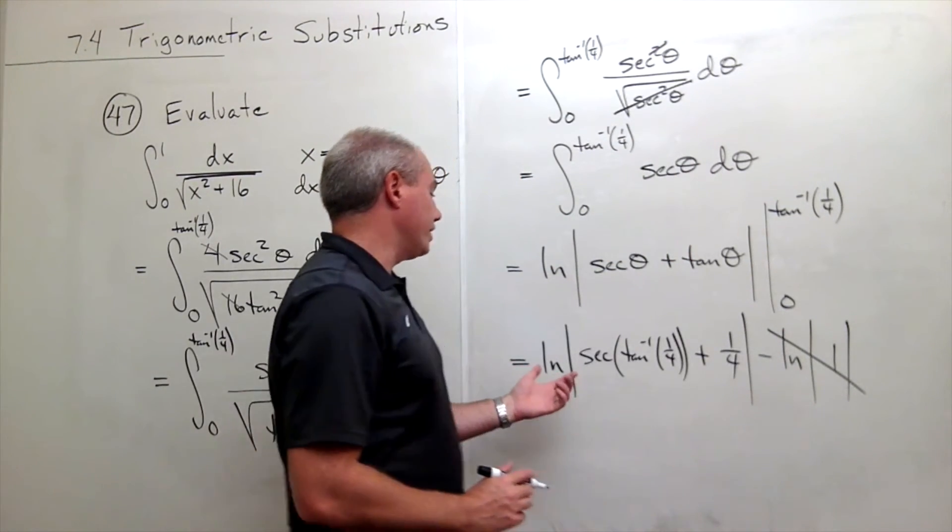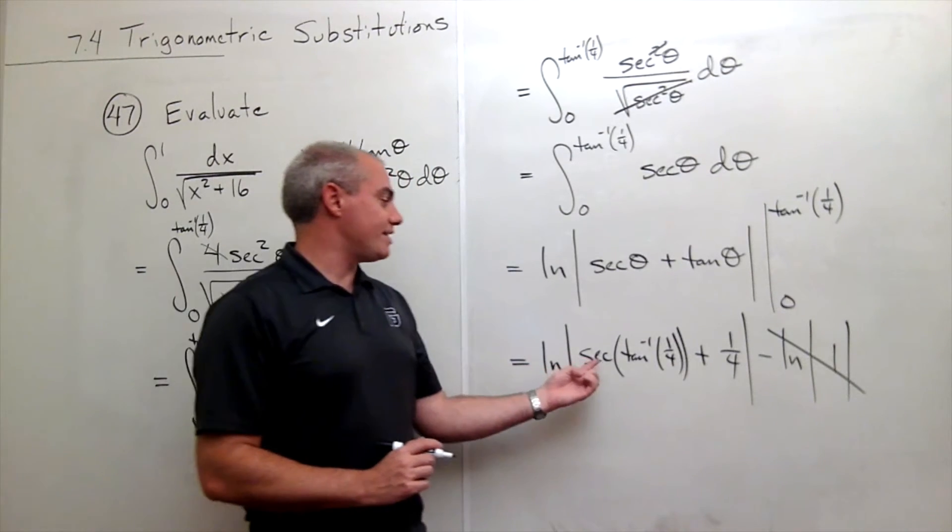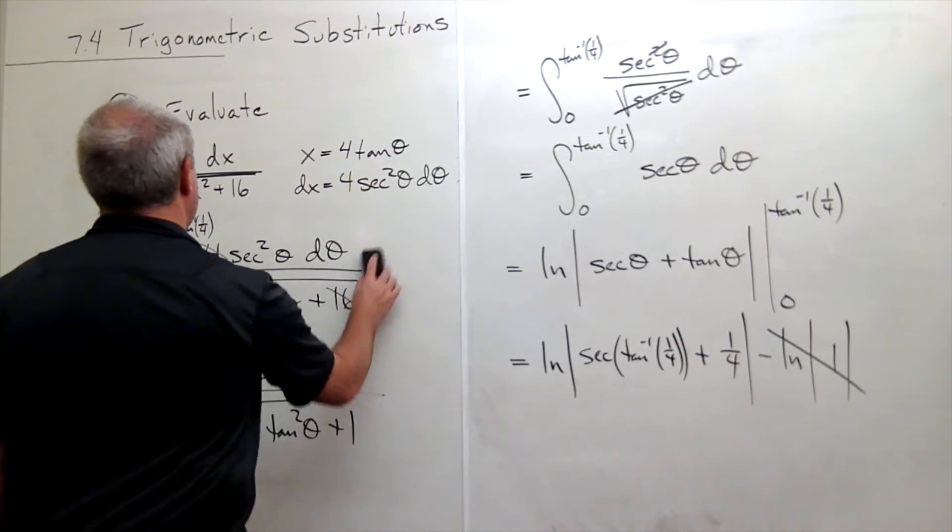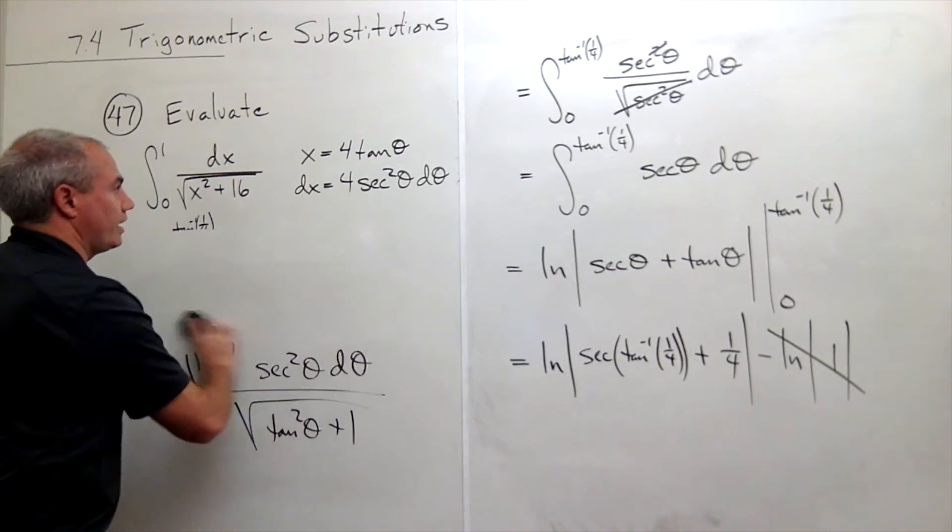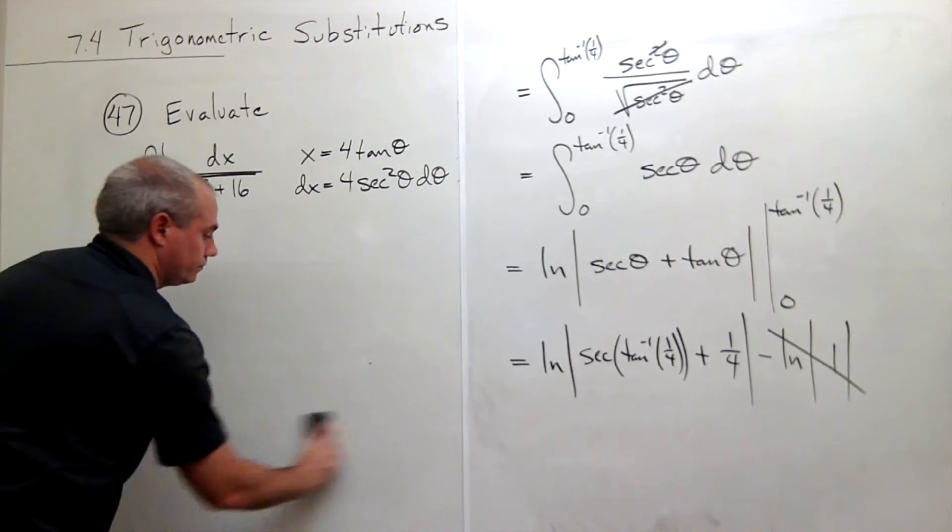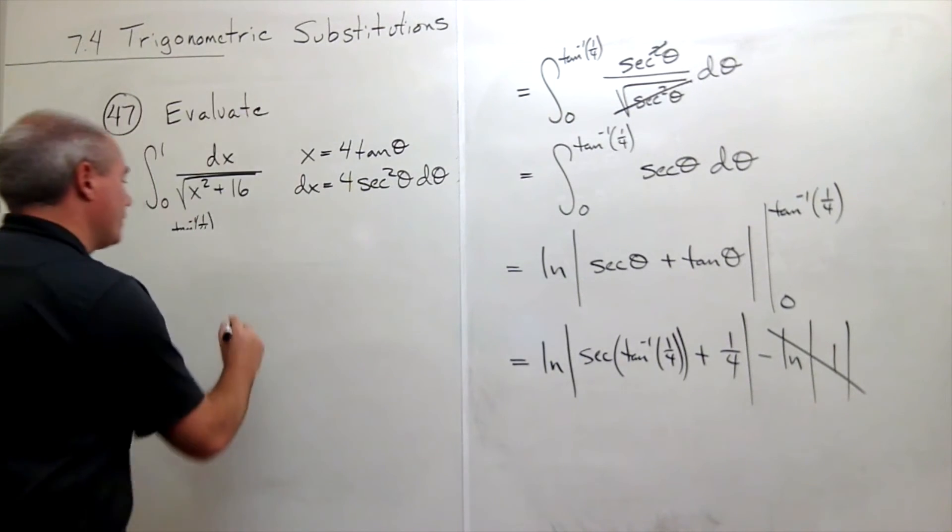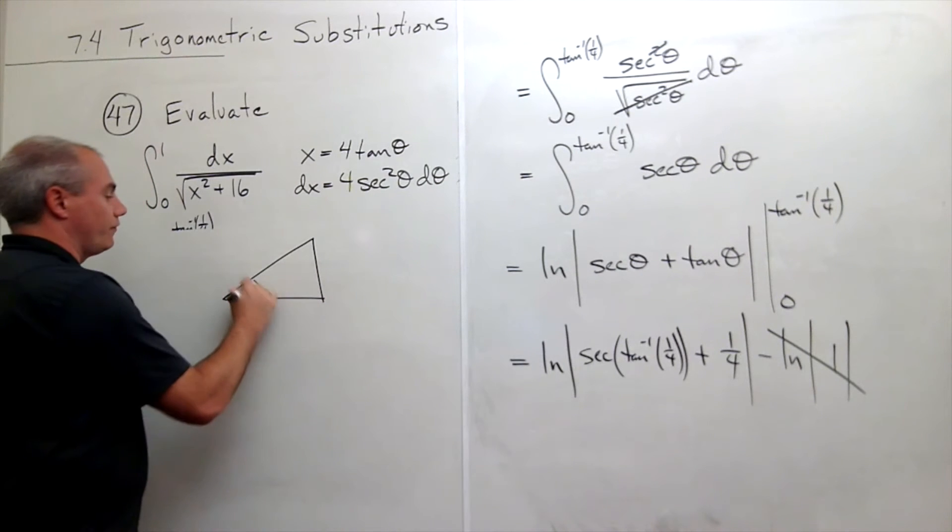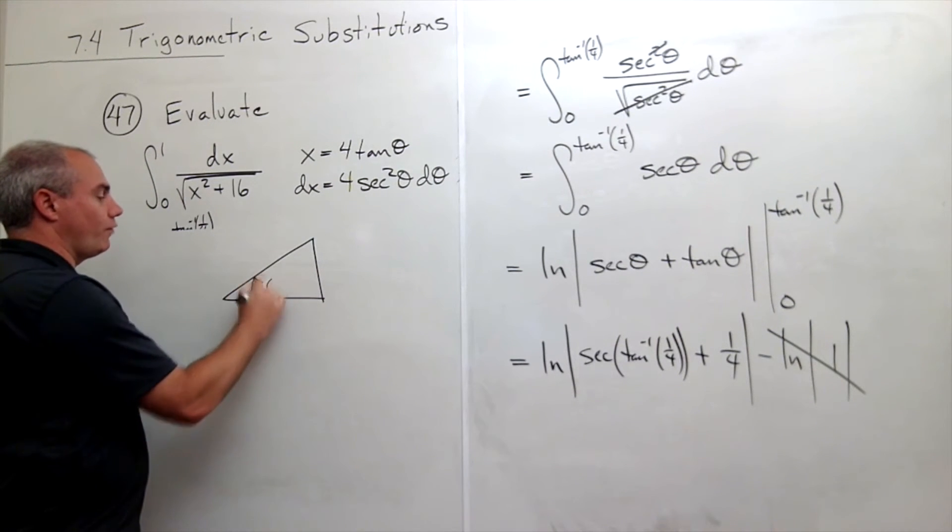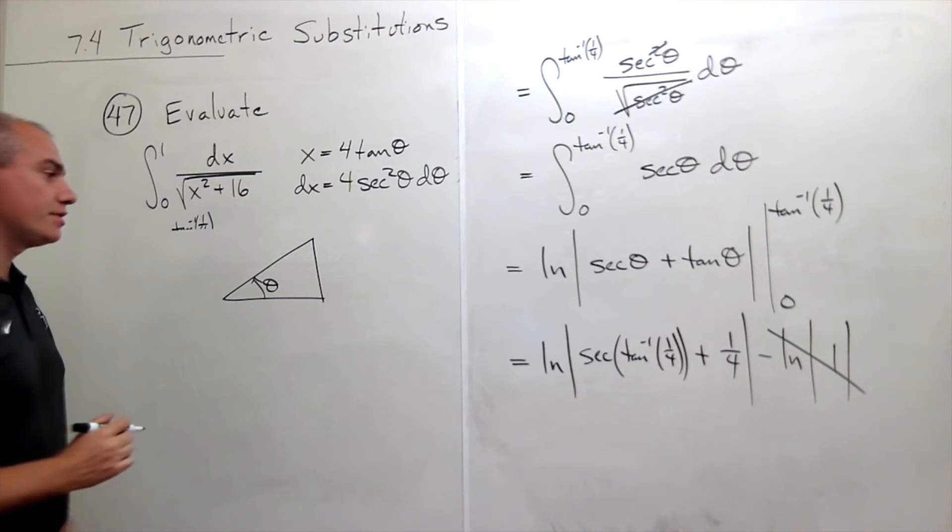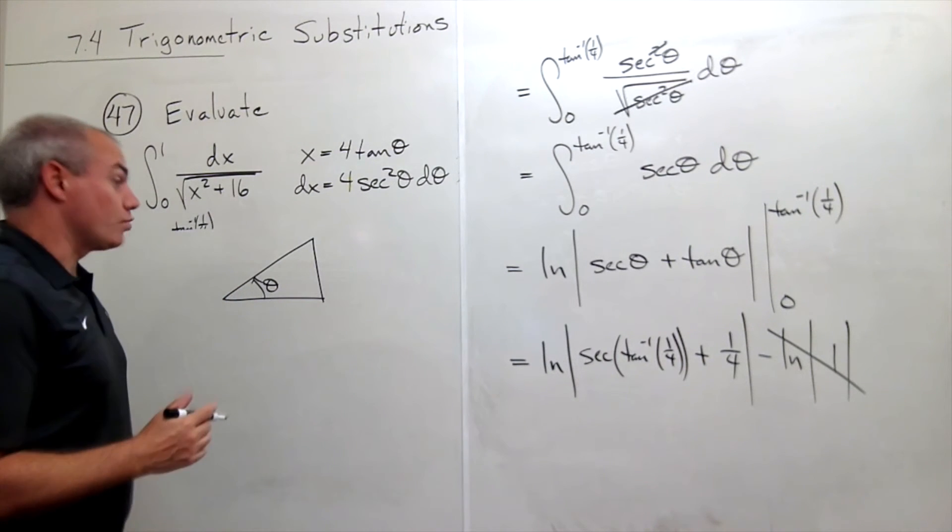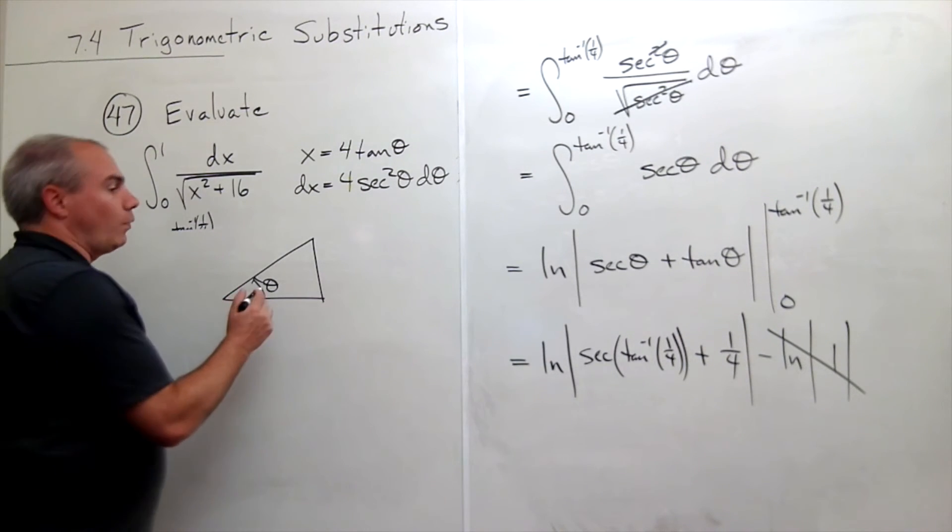The last thing I really need to look at here is what is secant of tan inverse of 1 fourth. Well, let's do a little work here, and I think we can figure it out. Remember, tan inverse of something is an angle. So if this is tan inverse of 1 fourth, theta in other words, then tangent of that angle is 1 fourth. Well, what does that mean?